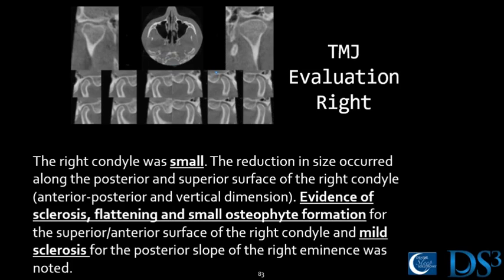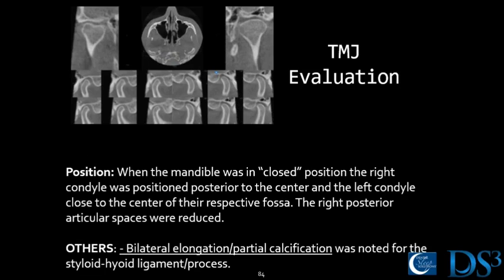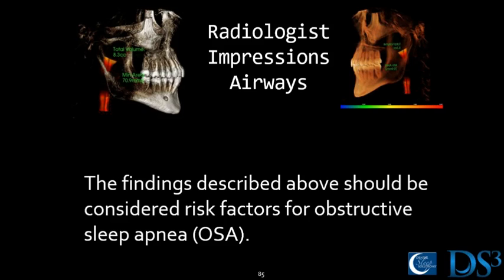The radiologist evaluation noted evidence of mild sclerosis and flattening of the superior posterior surface of the left condyle, and sclerosis of the posterior slope of the left eminence was noted. The right condyle was a little smaller — that smallness might be evidence of sclerosis or an osteophyte formation, and mild sclerosis of the posterior slope of the right eminence was also noted. There was also some elongation and partial calcification of the styloid hyoid ligament process. So this patient may be at more risk for TMJ problems — it's nice to know this if we're going to move their jaw forward.